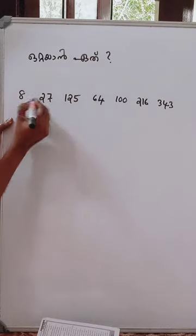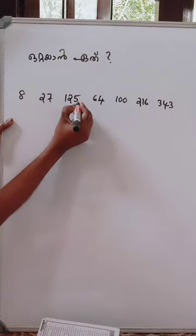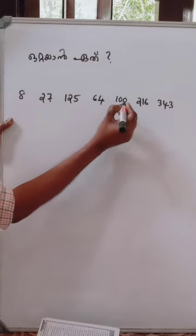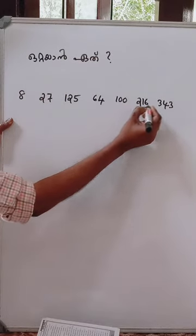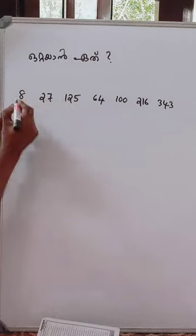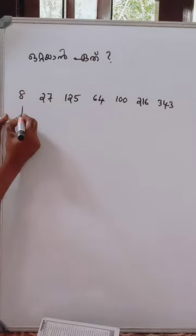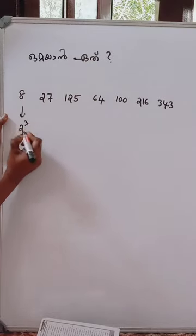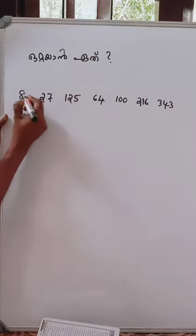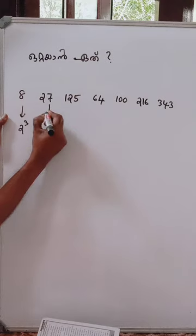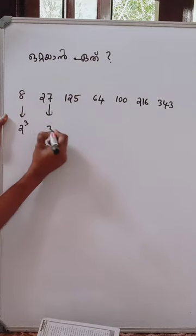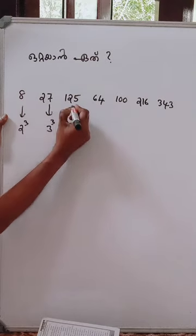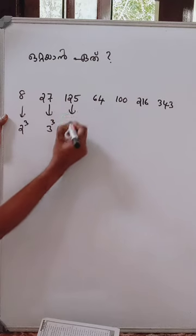Now we can see the one thing: 253, 255, 150. This 8 is 2 cubes — 2 x 2 x 2 is 8. 27 is 3 cubes. 125 is 5 cubes.